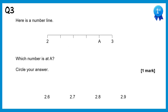For this question we have a number line and we need to find the value of A. The number line starts at 2 and ends at 3, split into 5 equal sections, so each section must be 0.2. So it goes 2, 2.2, 2.4, 2.6, 2.8, and then 3.